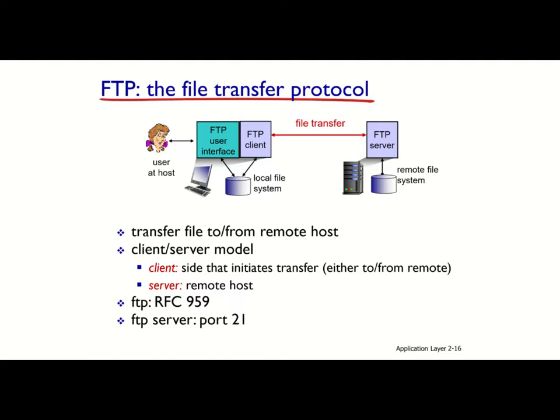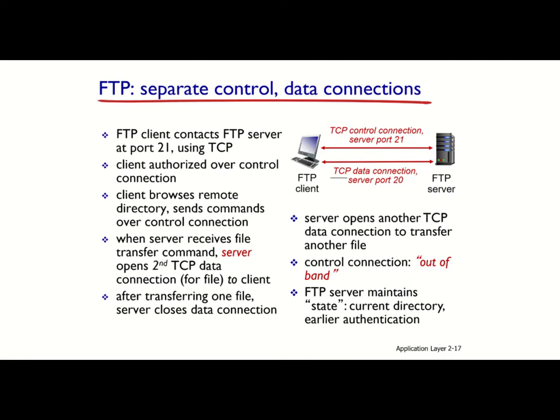As mentioned earlier, HTTP server listens on port 80, but FTP server listens on port 21. That's the difference — they obviously have to listen on different ports because if one computer wants to run both FTP and HTTP, it must be able to do so, and therefore they must use different port numbers. The FTP client must contact the FTP server on port 21 using TCP protocol, and the FTP server always listens on port 21.